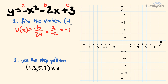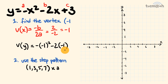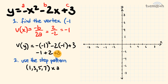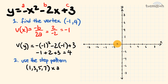Now let's work out the y-coordinate by substituting x equals negative 1 into the equation. We have negative of negative 1 squared, minus 2 times negative 1, plus 3. Negative 1 squared is 1, and the negative of that is negative 1. Negative 2 times negative 1 is positive 2, plus 3. So negative 1 plus 2 is positive 1, plus 3 equals 4. The vertex is at negative 1, 4. Let's plot that.